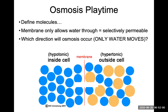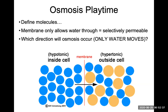For the osmosis activity, always define the molecules first — which ones are too big to get through the membrane. The membrane only allows water to go through. In this example, the blue circles are water and the yellow circles are the solute. Water moves from an area of high water concentration to low water concentration. The solutes suck the water onto their side, so water will travel through the selectively permeable membrane to the right.